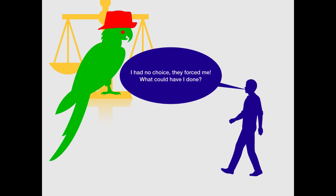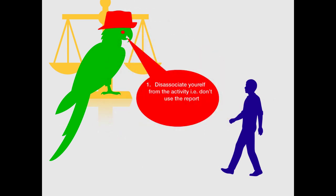So then Ross says, I had no choice. They forced me. What could I have done? So here is what guru has to say. Step number one, you should have disassociated yourself from the activity. Step number three, you should not have used the report.